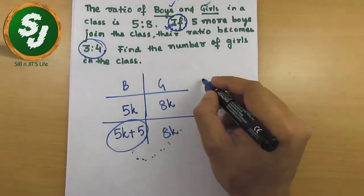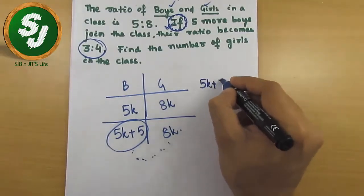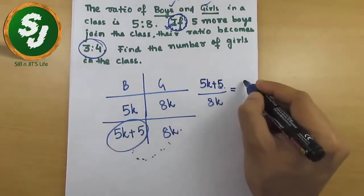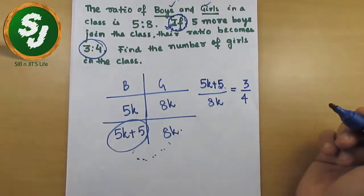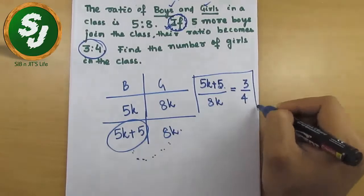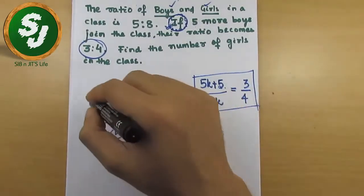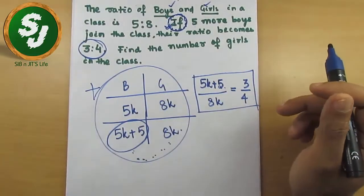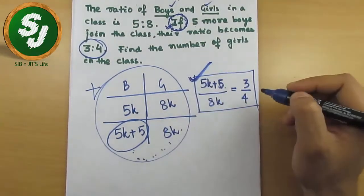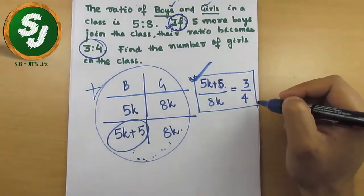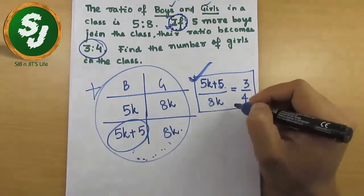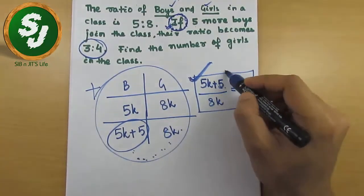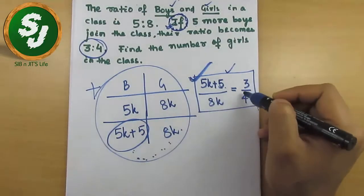To frame the equation from this data: 5k plus 5 is the number of boys and 8k is the number of girls, and their ratio is 3 by 4. So the equation is (5k + 5) / 8k = 3 / 4. In an examination, you can write this equation directly from the start — many students do begin from this step.